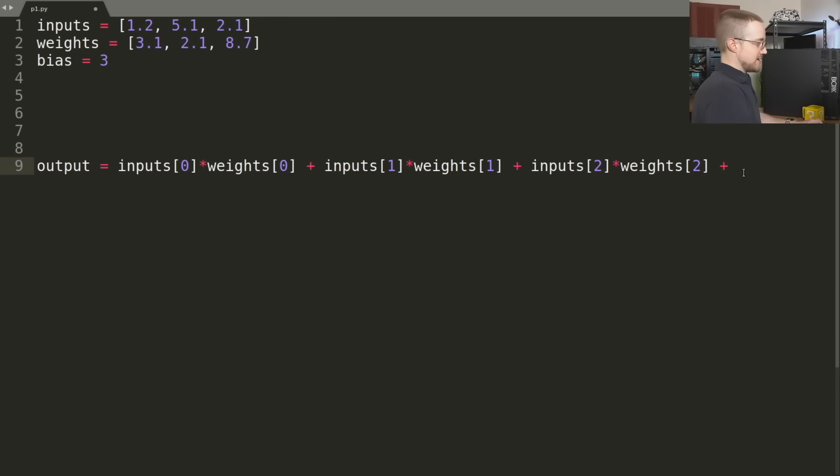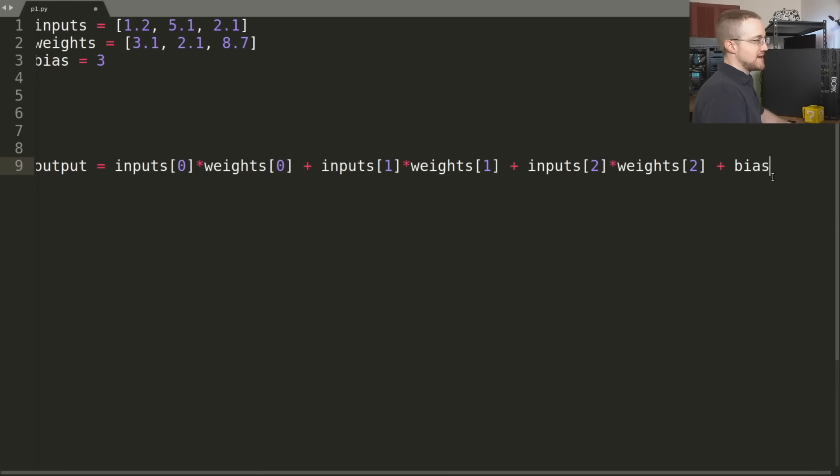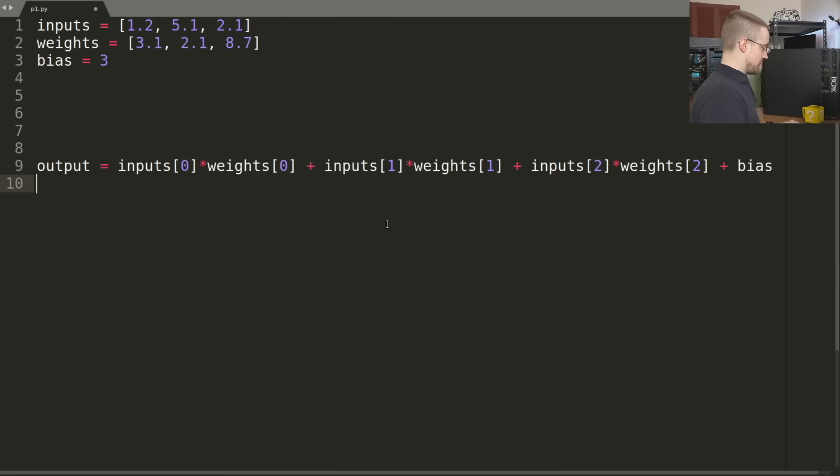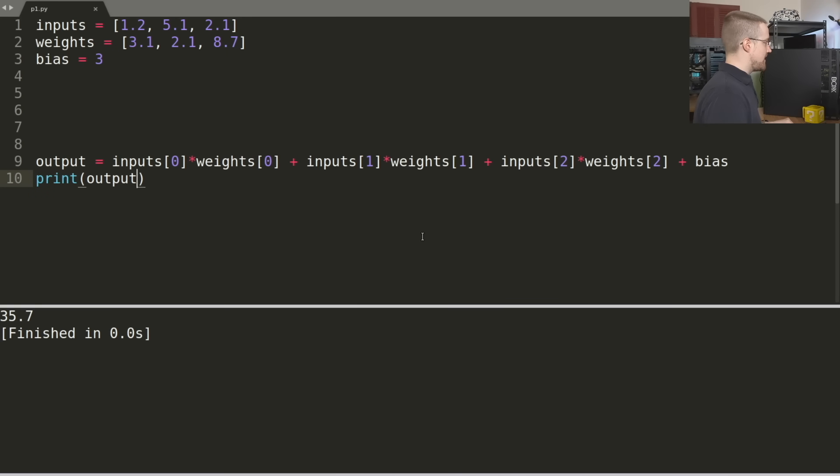And then we just need to add the bias. That is basically so far - there will be other things that will happen soon enough - but so far that is the output to our neural network. So we can just print the output, run it: 35.7. If you're new to Sublime Text, Control+B to run, but you'll have to set up to run with Python, whatever version of Python you want. I do expect that people know how to work with a programming language.